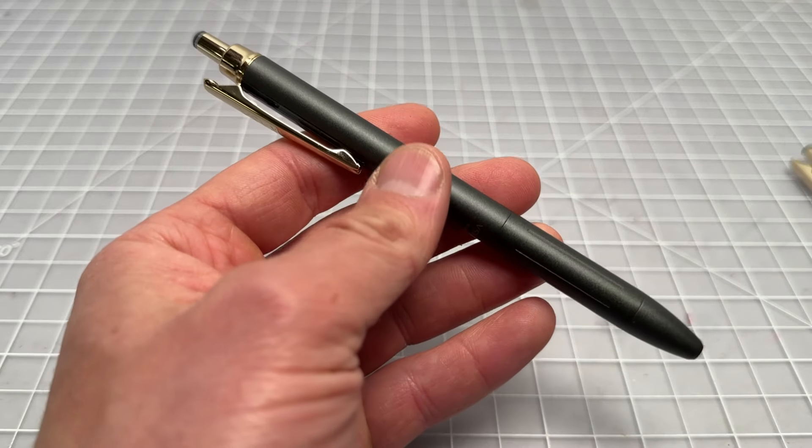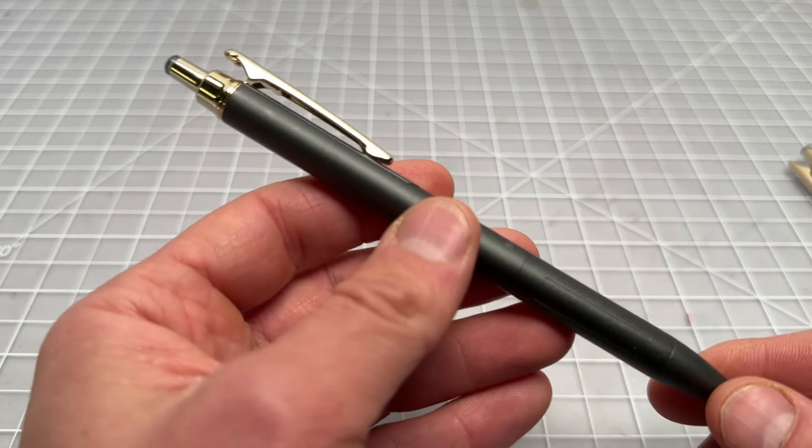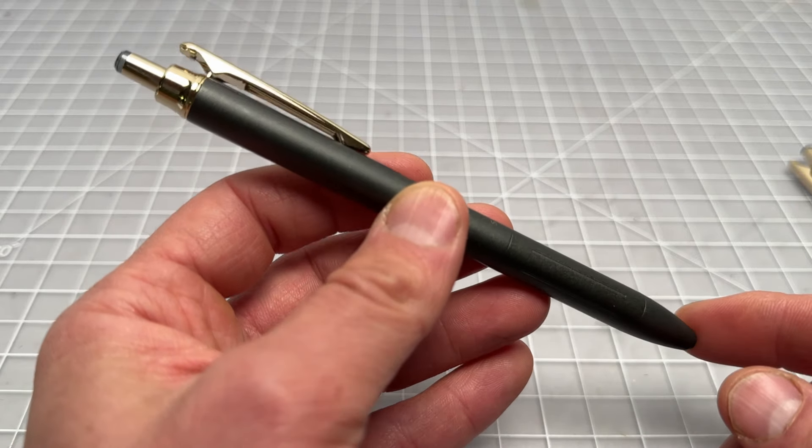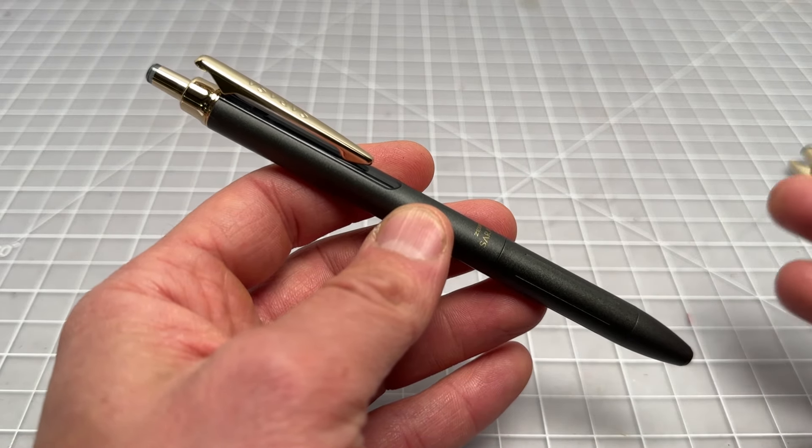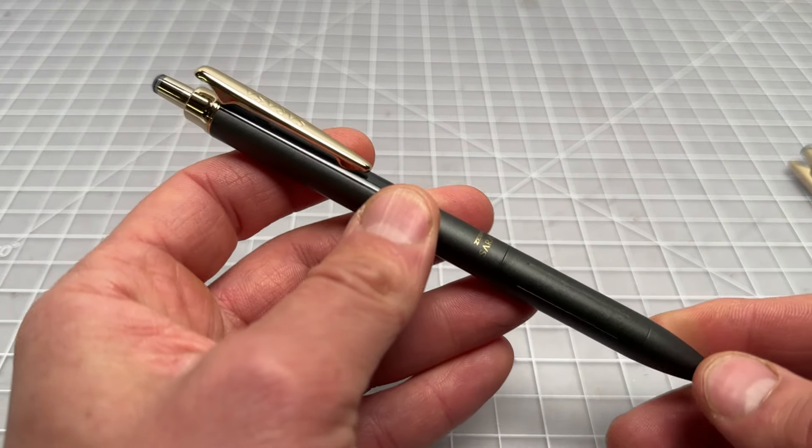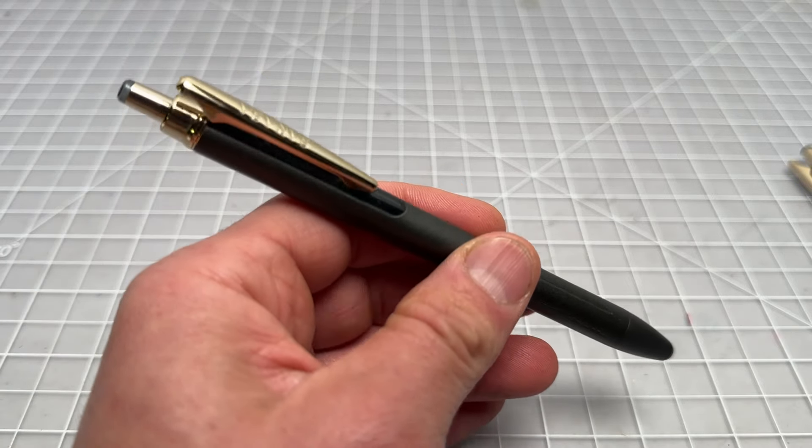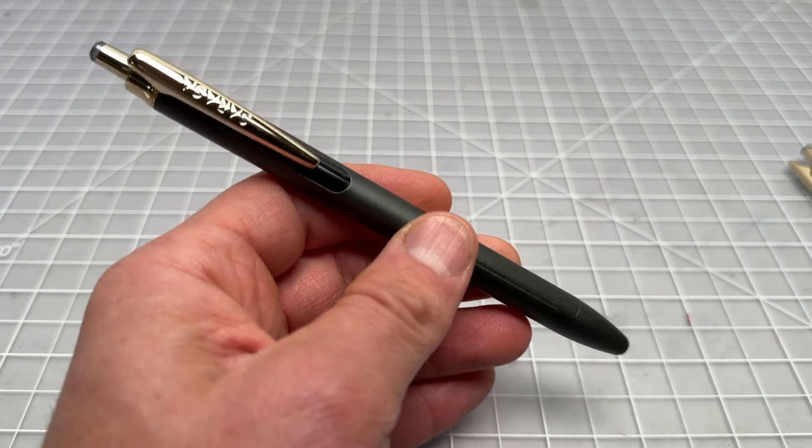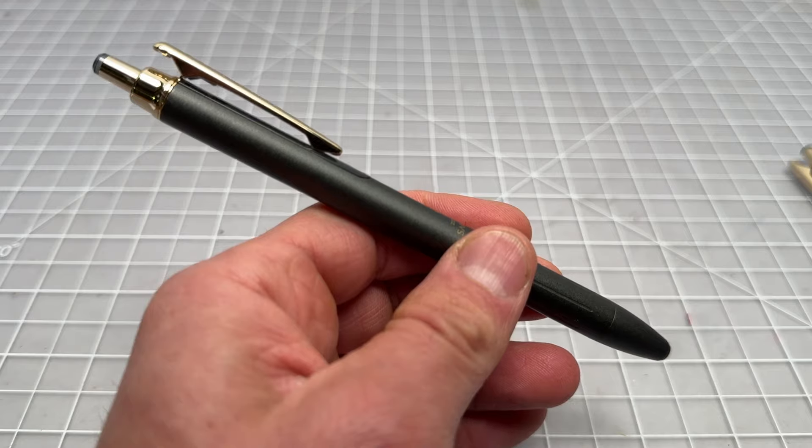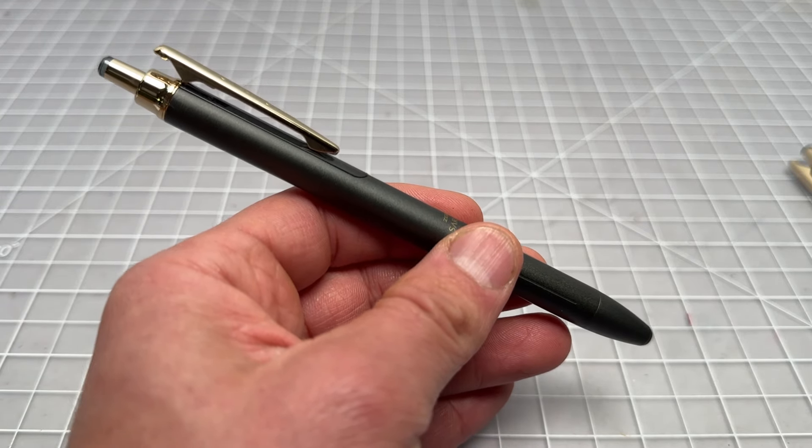But that is the Zebra Sarasa Grand Vintage Renewal in charcoal black. Super cool pen. Really glad to see Zebra revisiting a great design and improving it with that new clip and some nice changes to make it a little bit better of a writer with that lower center of gravity and the reduced weight. I actually think the reduced weight was a cool move and a smart move on Zebra's part. So thanks for watching.